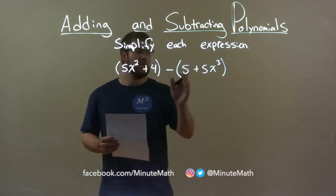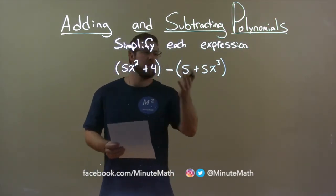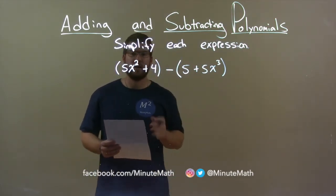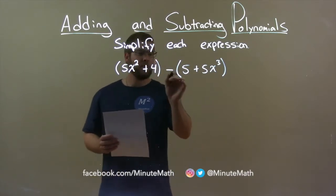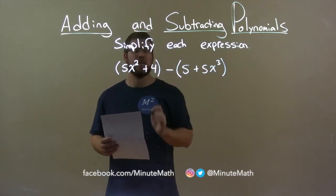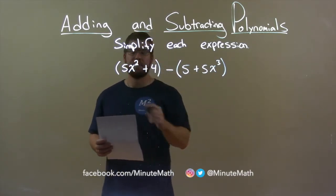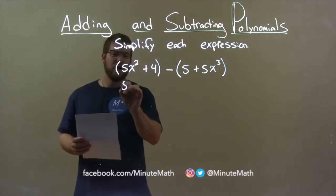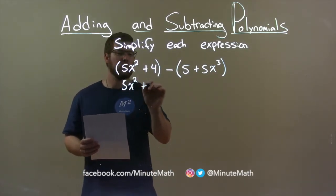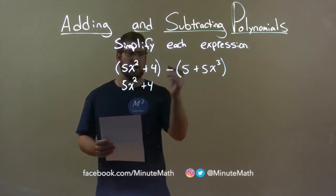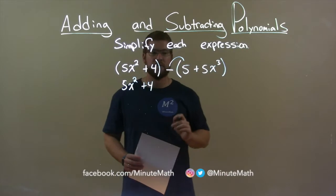First thing, I look within each parenthesis — there's nothing I can simplify, but I always check that. Now I have a minus sign in between these two parentheses, so I have to distribute that. The 5x squared plus 4 just comes down, but this minus sign we need to distribute.